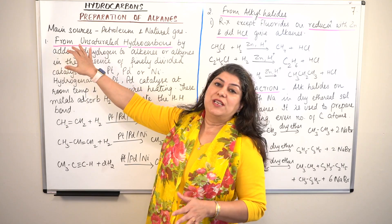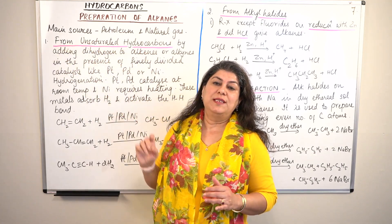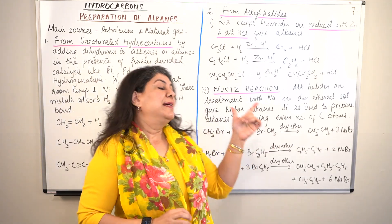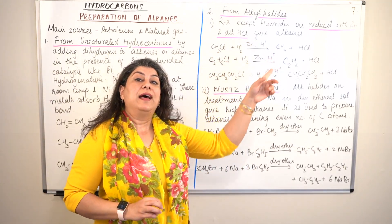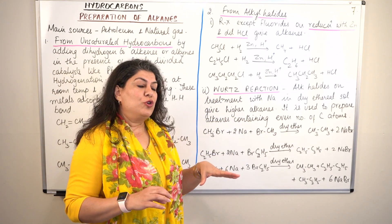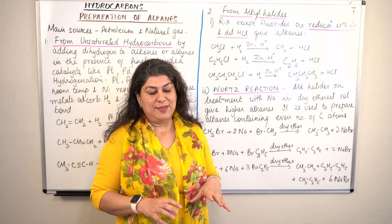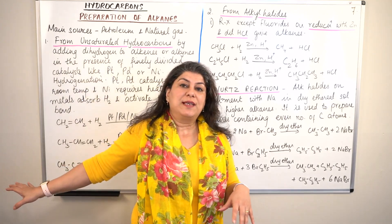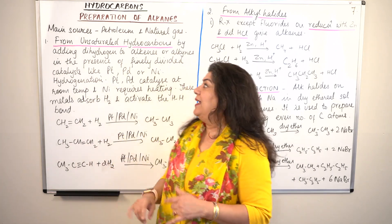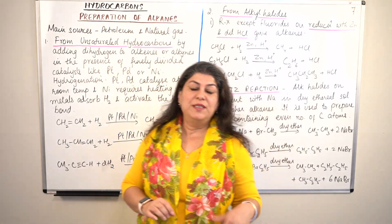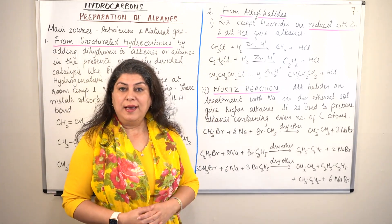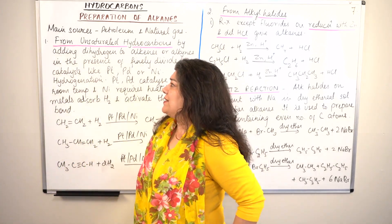The first source is from unsaturated hydrocarbons, that is from alkenes and alkynes. The second method is that you prepare it from alkyl halides, and the third method of preparation or the source would be carboxylic acids. In this video I am going to be discussing the first two — preparing alkanes from unsaturated hydrocarbons and from alkyl halides. So let us begin.